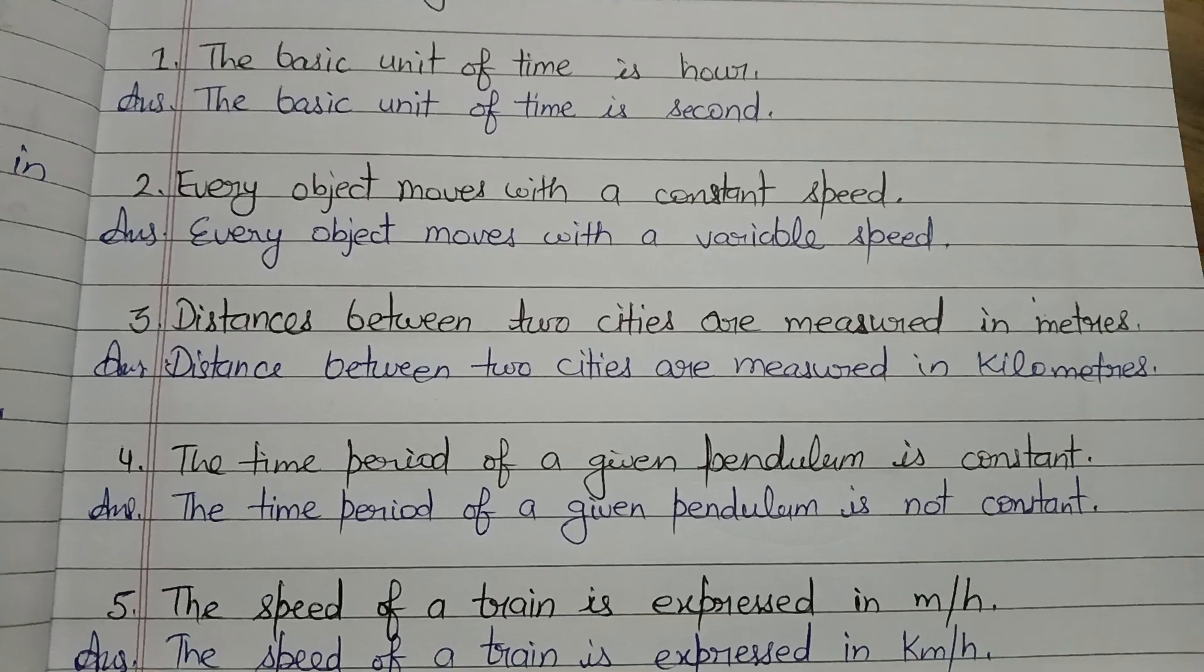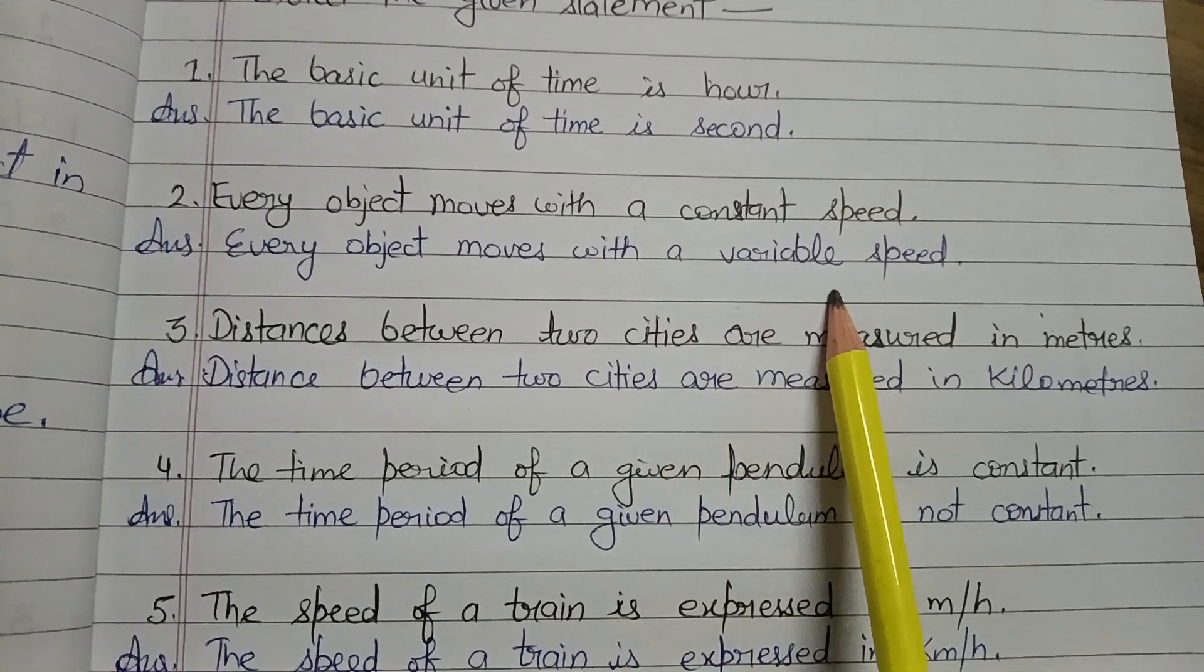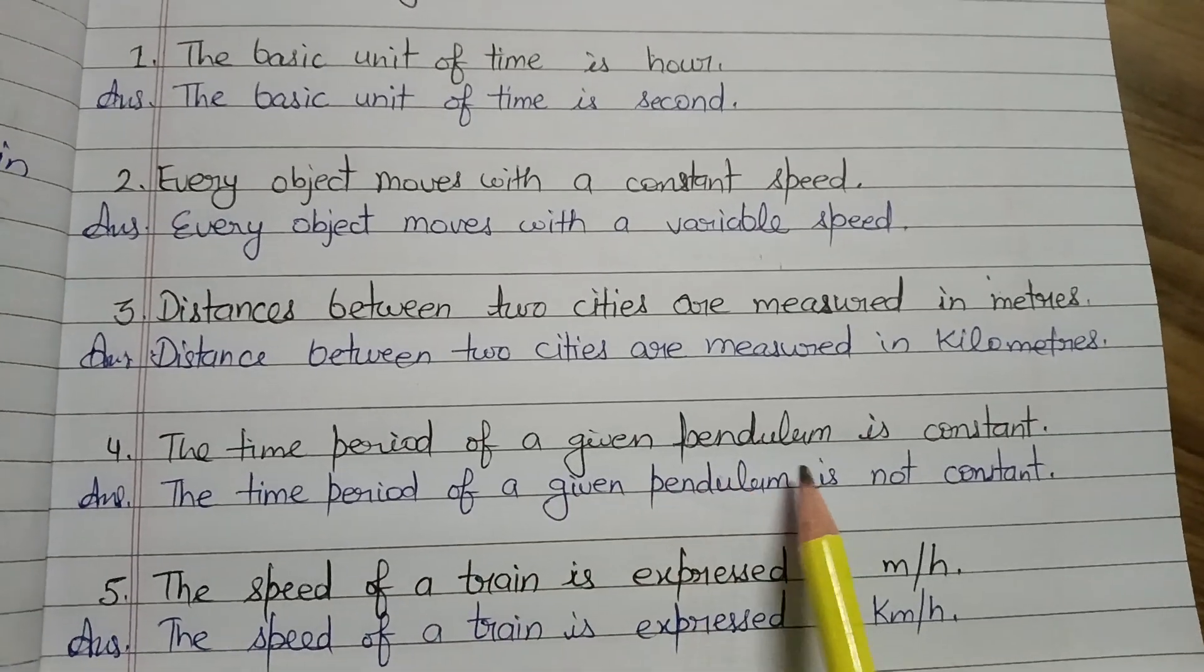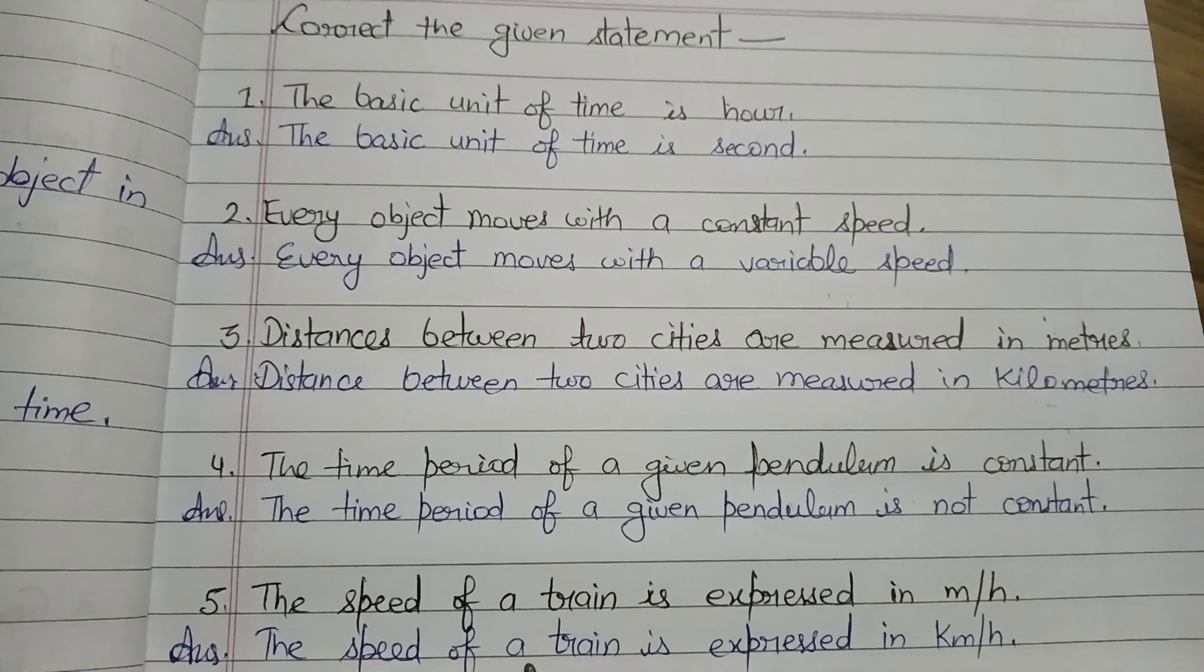Next, jo humne statements ki thi, unko correct karna hai. The basic unit of time is hour - hour nahi hota hai, kya hota hai - second. Jo humne first statement padhi thi. Next, every object moves with a constant speed - constant speed se variable speed hoti hai, to isse aise correct kar sakte hain.